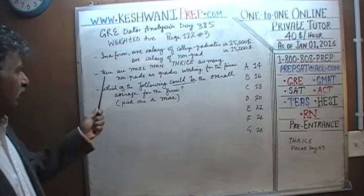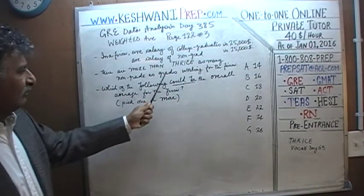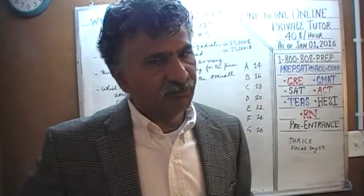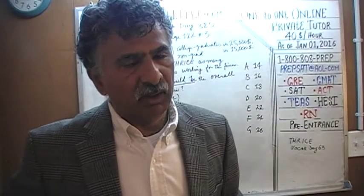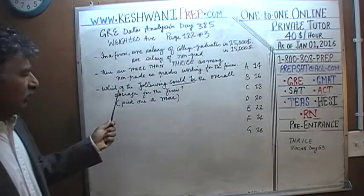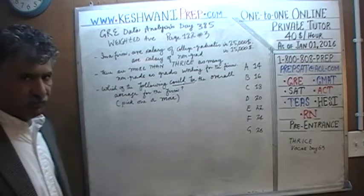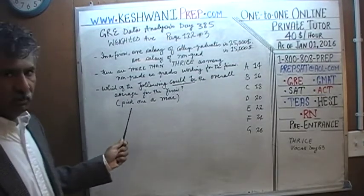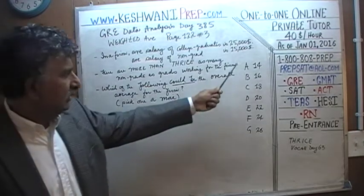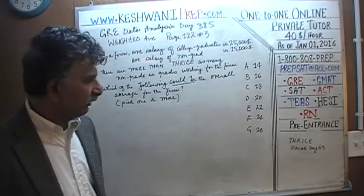We are further told that there are more than thrice as many non-graduates as graduates working in the firm — more than three times as many people without college degrees. The question simply is: which of the following could be the overall average salary for the firm? Pick one or more. The answer choices go from 14 to 26: 14, 16, 18, 20, 22, 24, and 26.